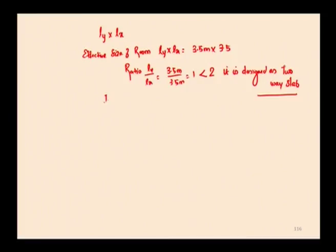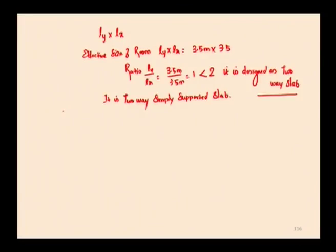It is confirmed as a two-way simply supported slab, which does not have any adequate provision to resist torsion at the corners. We need to find the bending moment coefficient by referring to Table 27 of IS 456-2000. Before designing the thickness, we first need to calculate the load acting over the slab — that is, the load calculations.